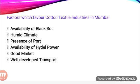Fourth, availability of electric power. Fifth, a good market facility available in Mumbai to sell their products. And the last factor is good transport facilities — roadways, railways, port facilities, and airways. Since all means of transport are available in Mumbai, that is another key factor favoring the cotton textile industries there.